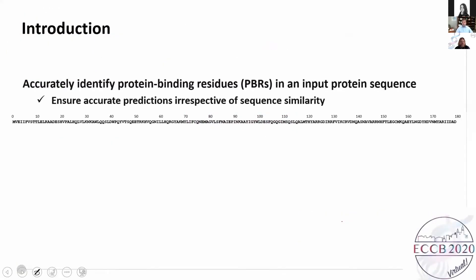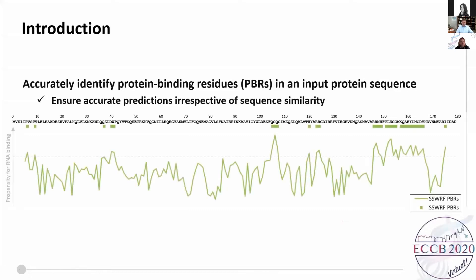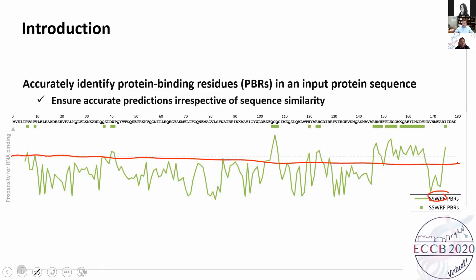We work with methods that make predictions of protein binding directly from protein sequences. These methods work on sequences dissimilar to other annotated proteins, making them more robust than alignments that require higher levels of similarity to be accurate. An example is provided by the SSWRF method, which includes a numeric propensity for protein binding shown using a green line, and a derived binary classification for each amino acid typically based on a threshold. Residues above that threshold line are annotated as binding.